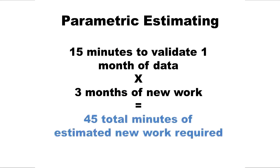What if you're being asked to estimate something that is somewhat repetitive? Perhaps validating the data. You know it takes about 15 minutes to validate one month of data, and you were going to validate three months. Then it's reasonable to use some kind of formula, perhaps like this: data validation time equals 15 minutes times three, or 45 minutes. When you do this, this is called parametric estimating. Be sure to write this down in your estimating table, and you can refer back to it.